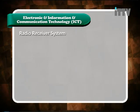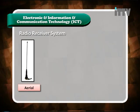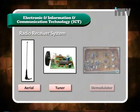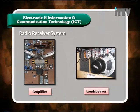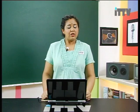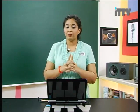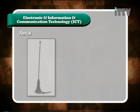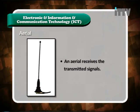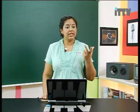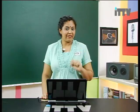The five components of the radio receiver system are: aerial, tuner, demodulator, amplifier, and loudspeaker. The aerial receives the transmitted signals. The tuner filters the audio signals needed — it selects the desired station.